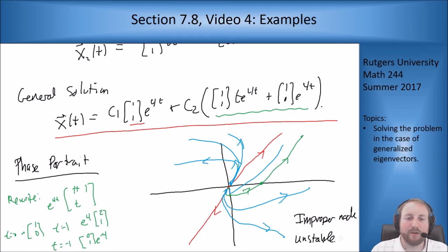What we saw from this is we got an improper node, and it's unstable because everything's running away from it. There's a fully worked out example of everything for this problem, from start to finish - finding the eigenvalues, eigenvectors, generalized eigenvectors, general solution, and drawing a phase portrait.